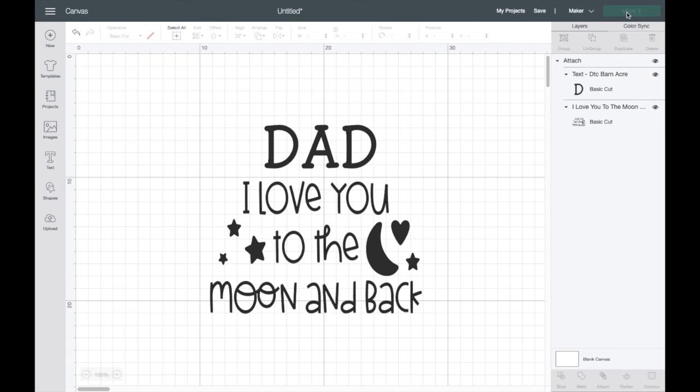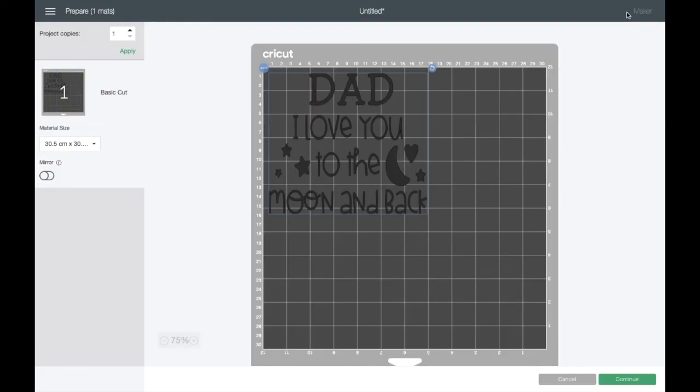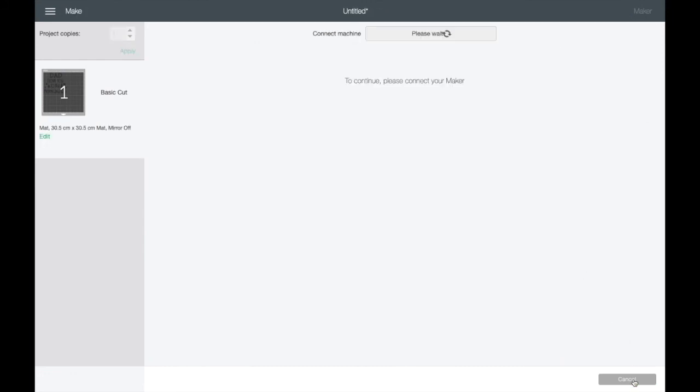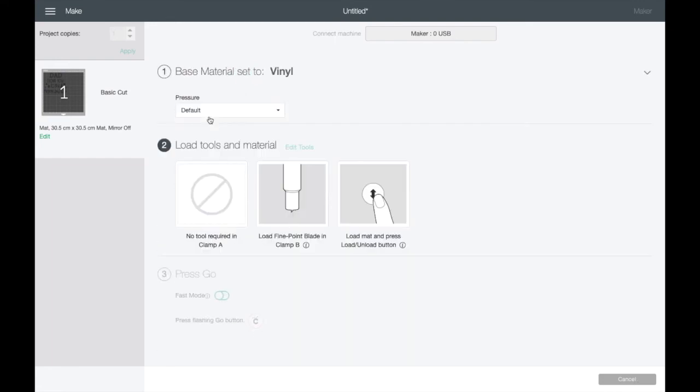So let's just get the cut settings ready now. You can see that this is just a basic cut, nothing fancy at all going on here. I'm just going to select the vinyl setting and then I'm going to leave my pressure settings at default also for this one.